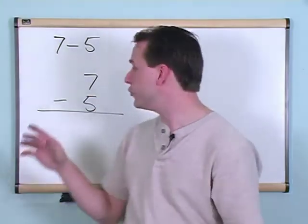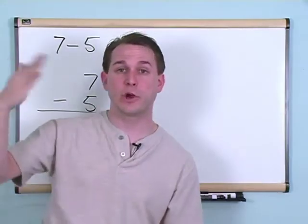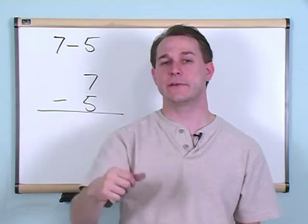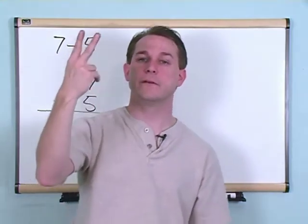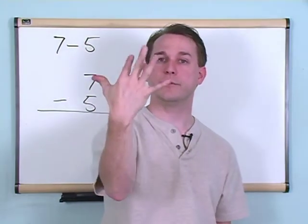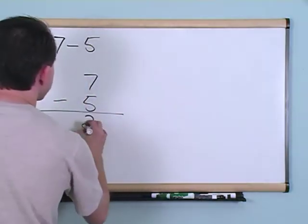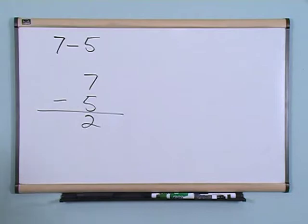So you start with seven, and then you want to subtract five from it, so you just go backwards, okay? You start with seven, we're going to take five away. So starting at seven, six, five, four, three, two. We took five away, and we got two is the answer, so two is going to be here, and that's exactly the answer, okay?